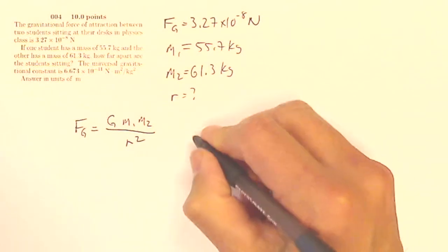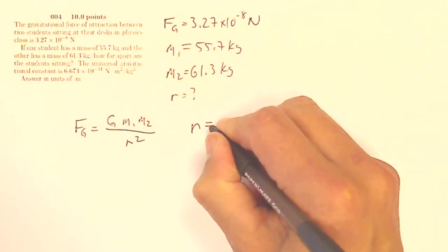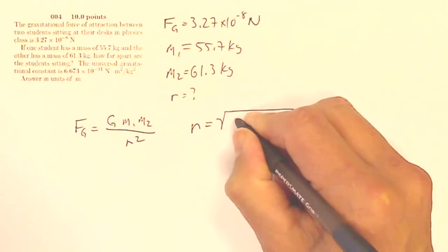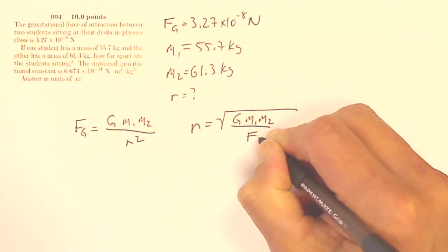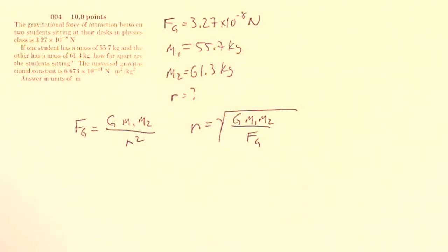multiplying by R squared and dividing by FG, I wind up with R equals the square root of G times M1 times M2 over FG, and that square root is over everything.